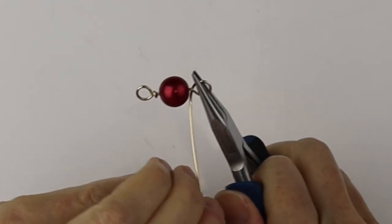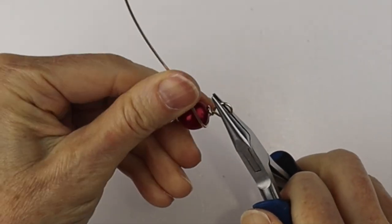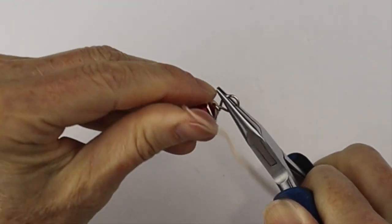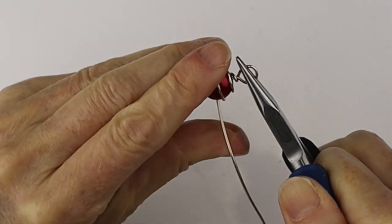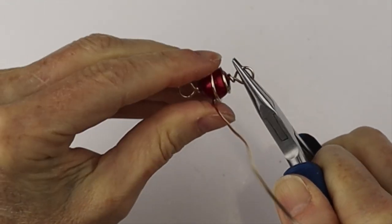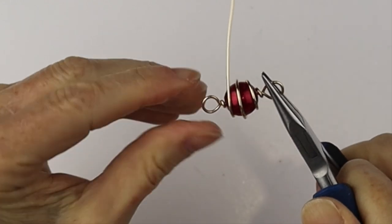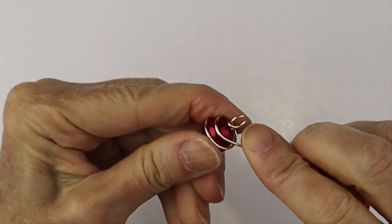So there we go. We have the two loops. Hold it with the flat pliers and then just wind the wire carefully back over the bead. Just moving our way down, careful that it doesn't slip, and just slowly bend it around holding the other end with the flat pliers.